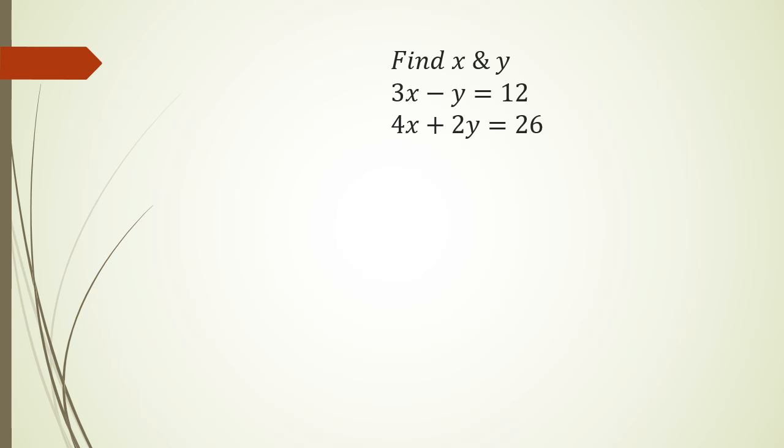All right guys, the second question, we've got 3x minus y equals 12, and 4x plus 2y equals 26. Now, what I could do is, I don't always need to eliminate x. I could eliminate y in this case. I am going to show you what happens when you eliminate x and the process behind it, and I'm also going to show you what happens when you eliminate y. So I'll do x first. Looking at this, I've got my coefficients of x are 4 and 3, and the lowest common multiple for 4 and 3 is actually 12, which means I've got to multiply the top equation by 4, and the bottom second equation by 3, because that would give me 12x.